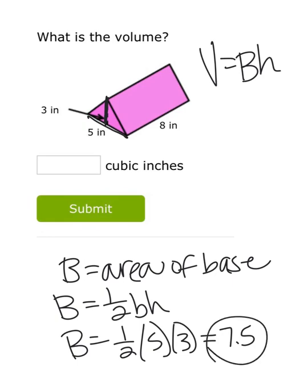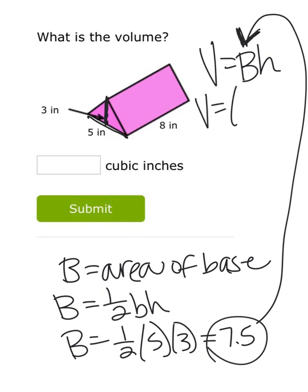Now I can replace that and plug it in for the area of base in my volume formula with 7.5. Now I'm looking at the height of the entire prism, which is 8. So to find the entire volume of that triangular prism, I would do 7.5 times 8, and that would give me a volume of 60 cubic inches.